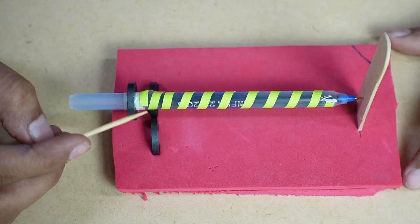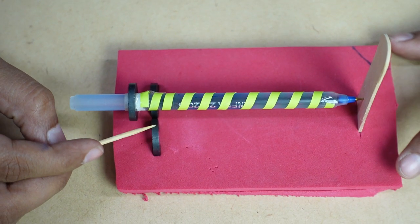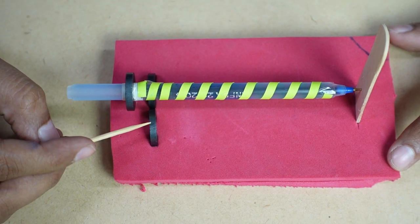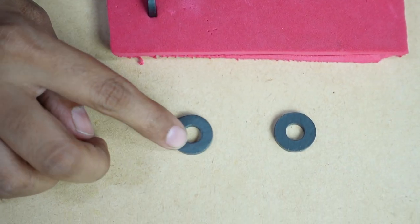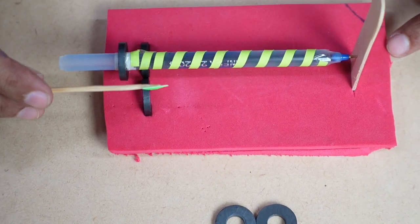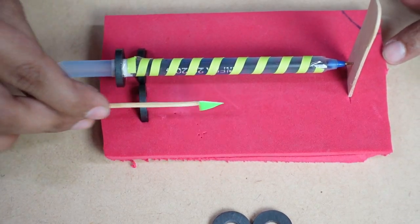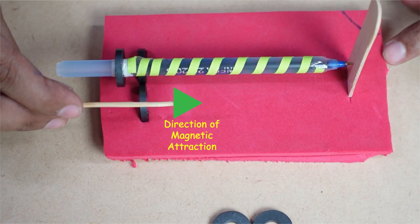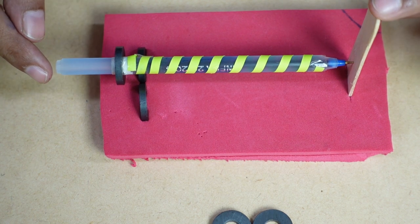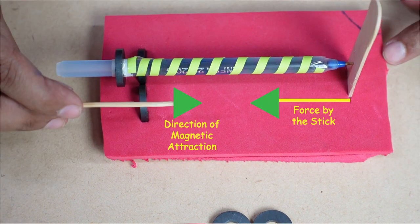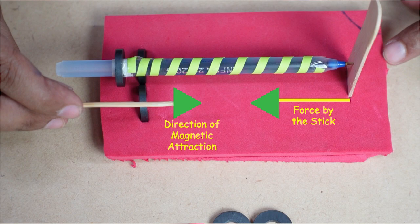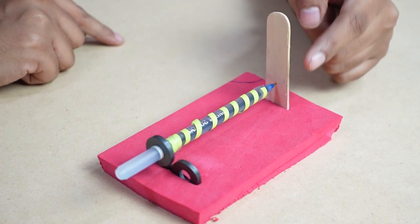Now we will see how the pen is levitating. The curved part of the base magnets attracts the pen magnet. Therefore, the pen tries to move forward. We have an ice cream stick that prevents the pen from moving forward. Therefore, the pen stays in this position.